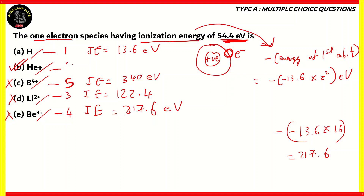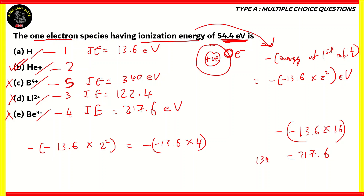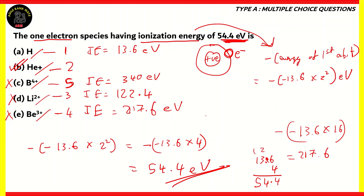Helium has atomic number 2. Let's check our calculation: IE = 13.6 × 2² = 13.6 × 4. Calculating: 6 × 4 is 24; 3 × 4 is 12, plus 2 is 14; 1 × 4 is 4, plus 1 gives 5. So the result is 54.4 electron volts. We have confirmed that the ionization energy of helium plus is 54.4 electron volts. Therefore, option B, helium plus, is the correct answer.